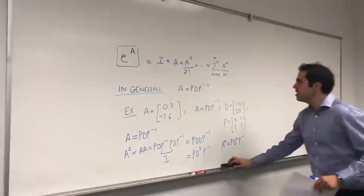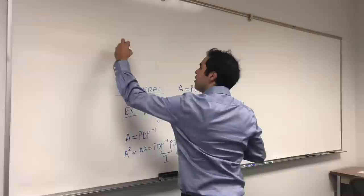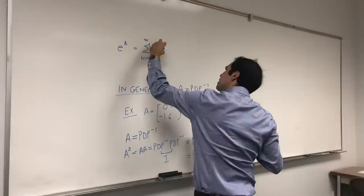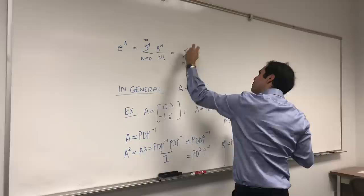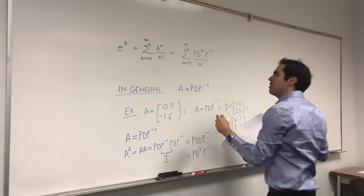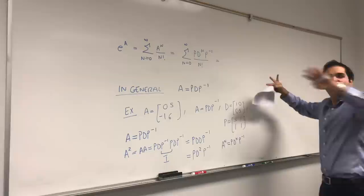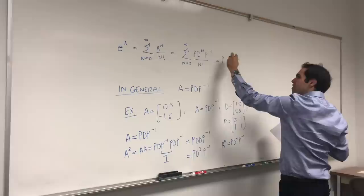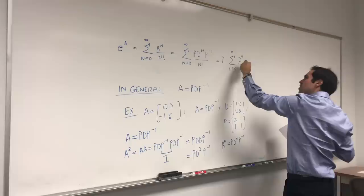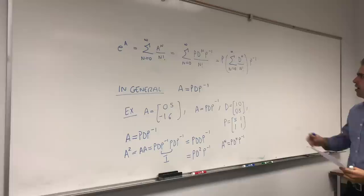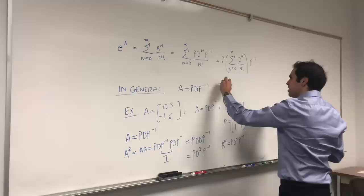And this is super useful in calculating E to the A, because then, what is E to the A? Remember, by definition, it's the sum from 0 to infinity of A to the N over N factorial, and that's the sum from 0 to infinity of PD to the N, P inverse, over N factorial. And what is that? Well, so you see, P and P inverse, they act like constants with respect to the sum, so you can actually pull them out. So, P sum from 0 to infinity, D to the N over N factorial, P inverse. But, this is just exponential of D. So that's PE to the D, P inverse.